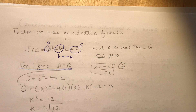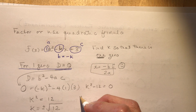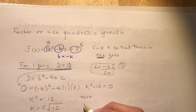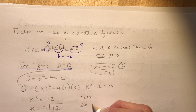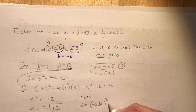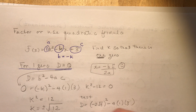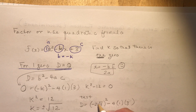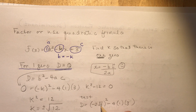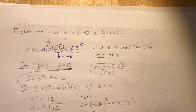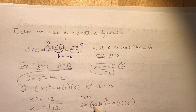Let's verify: plug in K = 2√3, so B = −2√3. The discriminant is B² − 4AC = (2√3)² − 4(1)(3) = 4 × 3 − 12 = 12 − 12 = 0. The discriminant equals zero — confirmed! This works for both plus and minus 2√3.